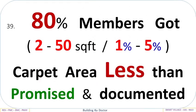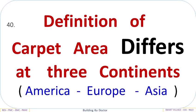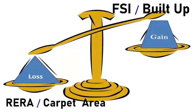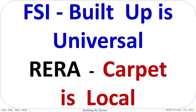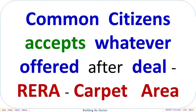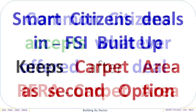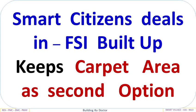80% of members got 2 to 50 square feet — that is 1% to 5% — carpet area less than promised and documented. The definition of carpet area differs across three continents: America, Europe, and Asia. Loss occurs in carpet area; gain is in FSI Built-Up. FSI Built-Up is universal; carpet area is local. Common citizens accept whatever is offered after the deal in carpet area. Smart citizens deal in FSI Built-Up and keep carpet area as a second option.